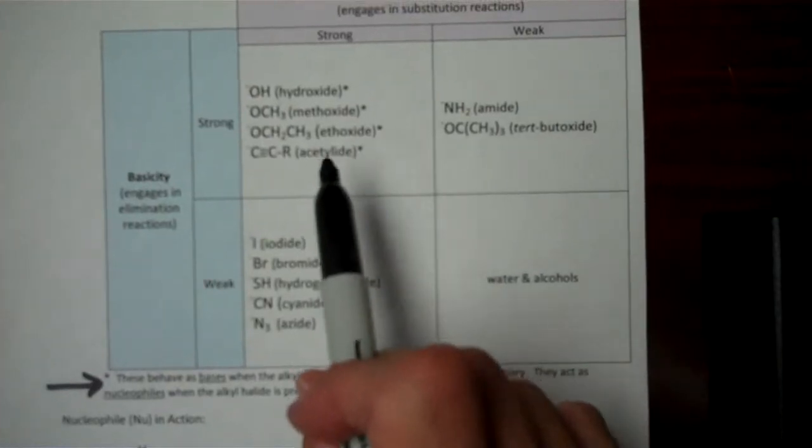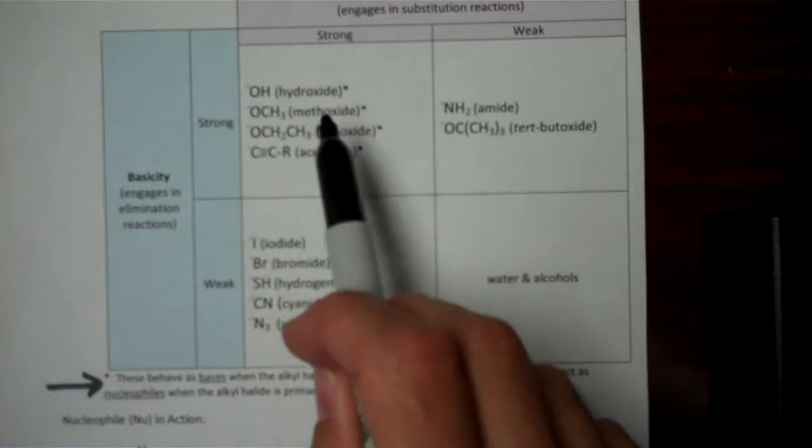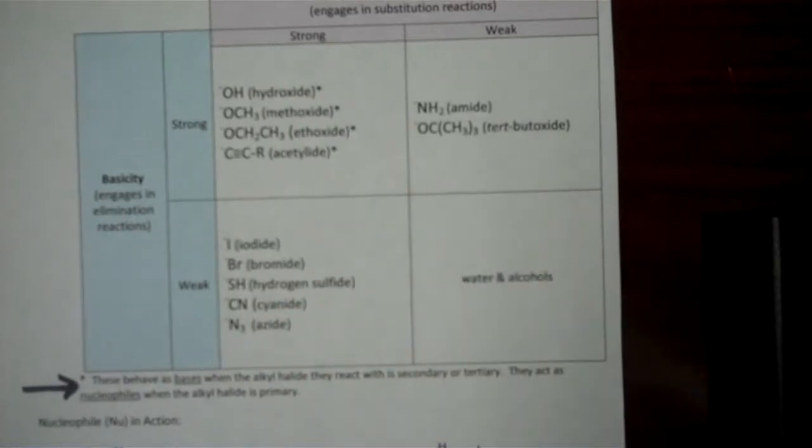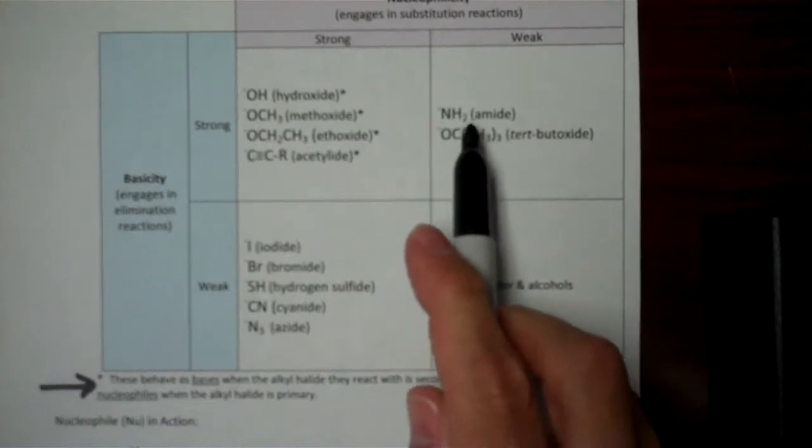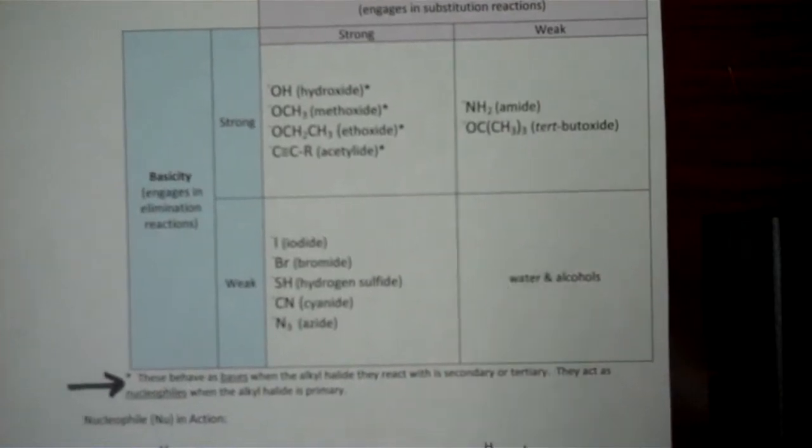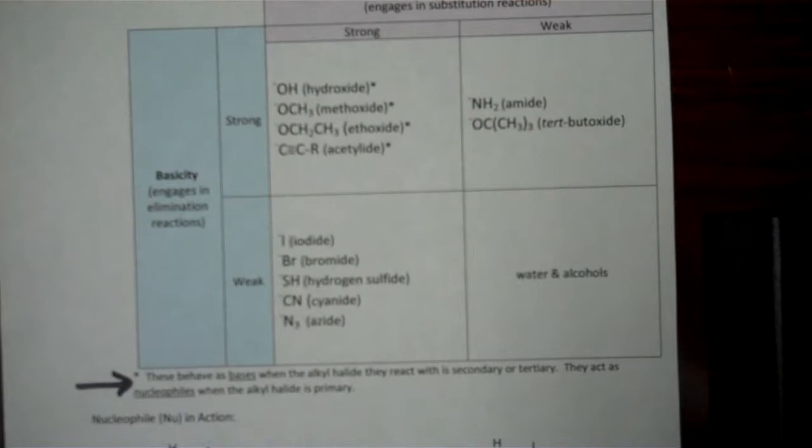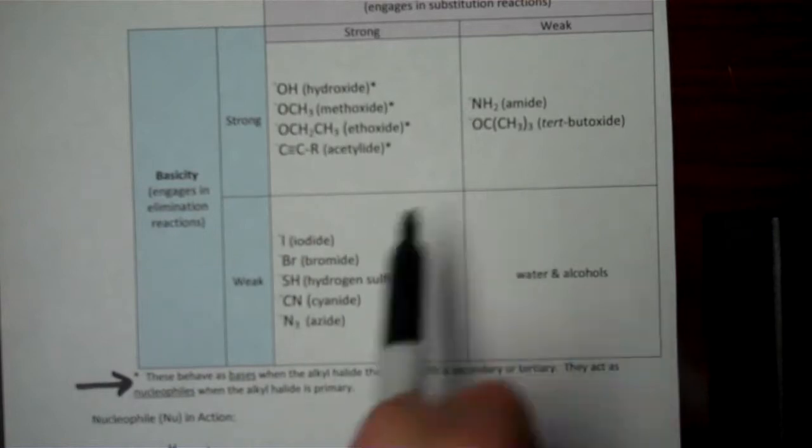Right next door to those strong base, strong nucleophiles are these strong bases that are weak nucleophiles, meaning things like amide and tertiary butoxide. They are good at pulling hydrogens away and turning alkanes into alkenes, and they don't really have much of a desire to behave as nucleophiles. When we want things to behave exclusively as a base, those are good choices.